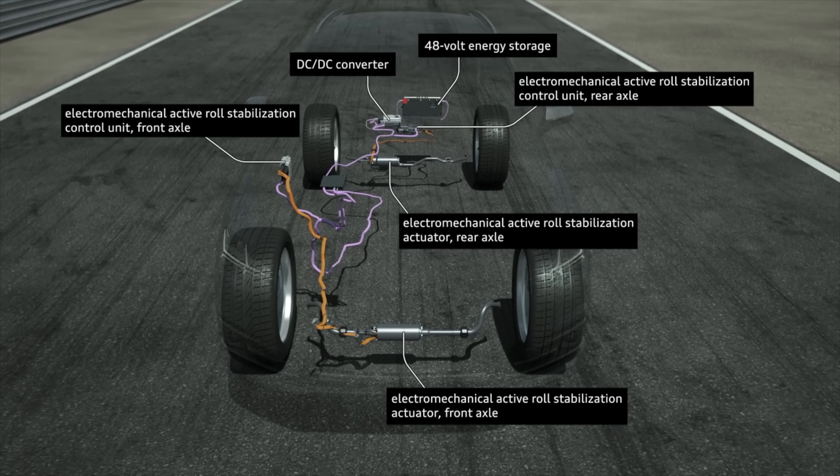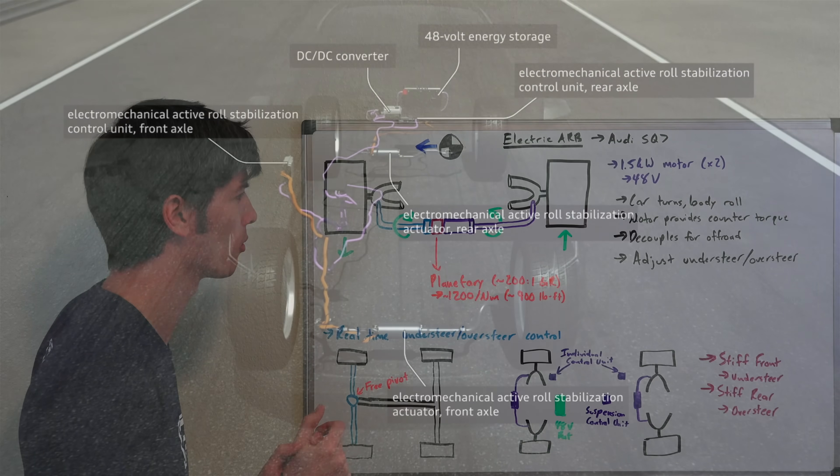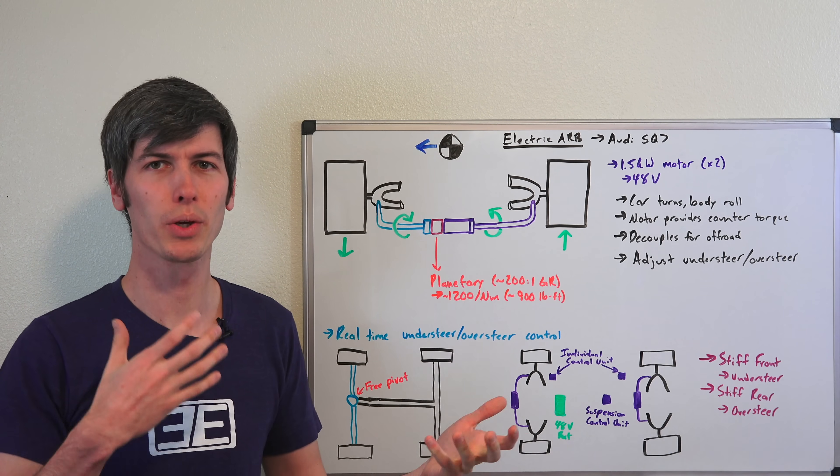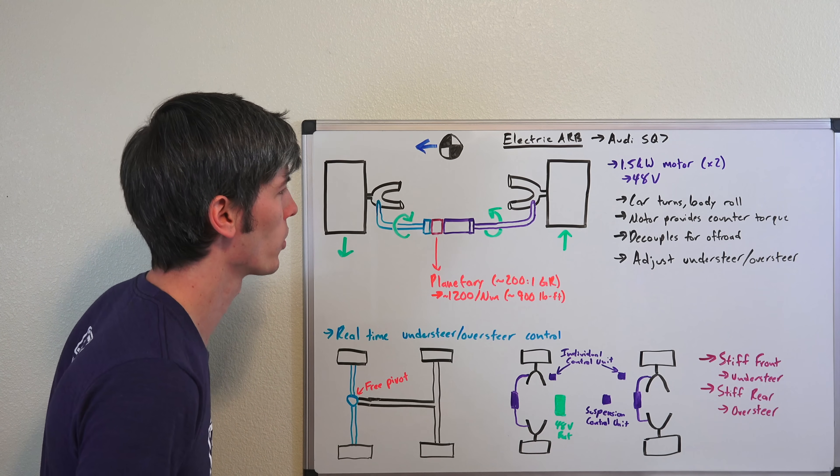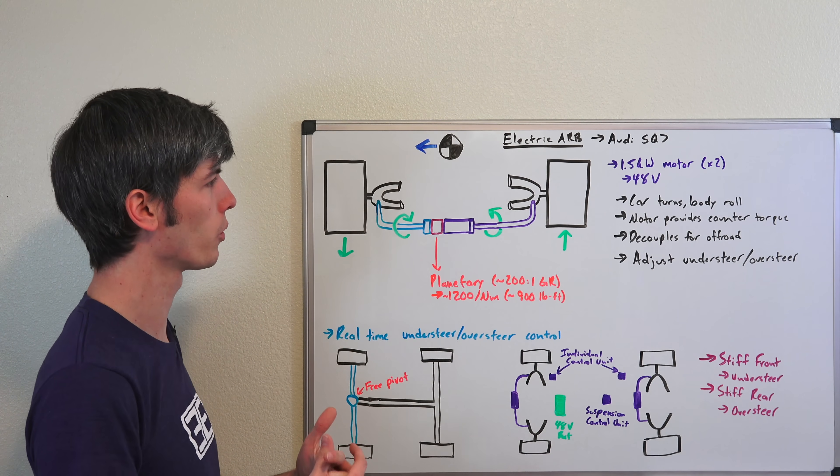An electronic sway bar or anti-roll bar acts just like a traditional anti-roll bar, with the difference being you can vary the stiffness through electronic control, which is very cool and has unique advantages.